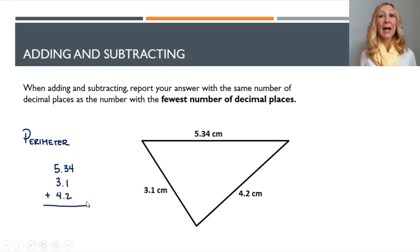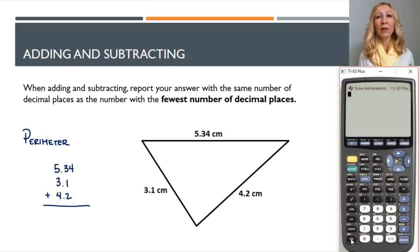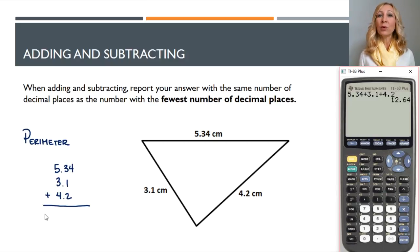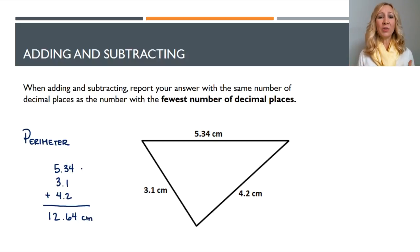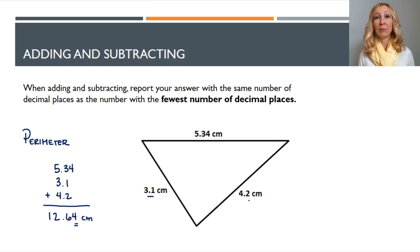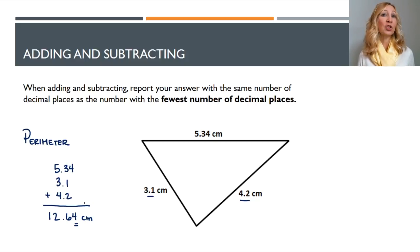When they add the numbers to get the perimeter — 5.34 plus 3.1 plus 4.2 — you type all of that into a calculator and get 12.64. But what you don't realize is that 12.64 has a very high amount of precision, the same as 5.34. Two of the measurements didn't have that precision. So really, you're creating precision out of nowhere, saying all sides were very precisely measured when two of them weren't. You can't report 12.64 centimeters because two of your measurements only went out to the tenths place, not the hundredths place.